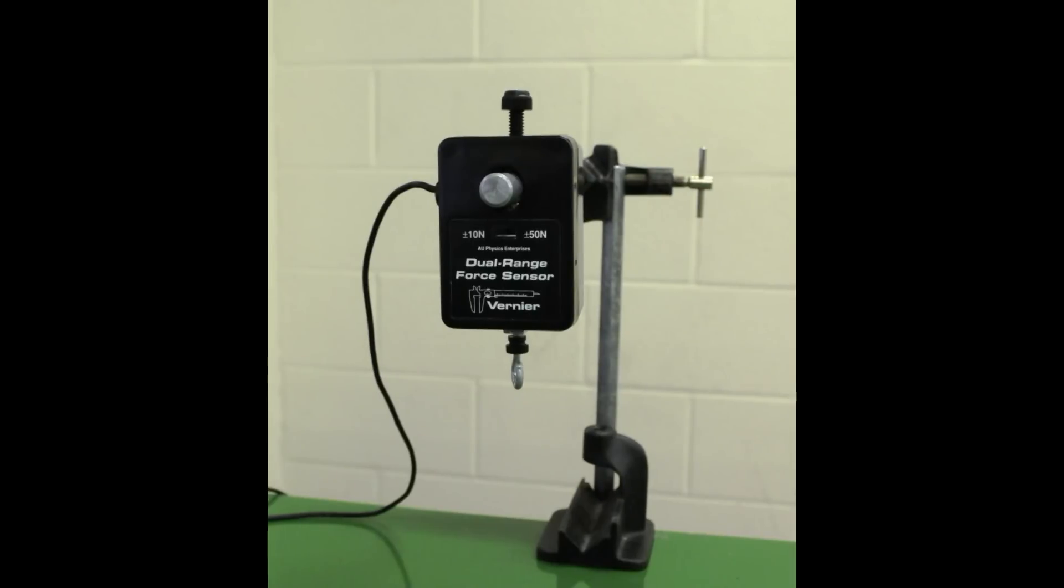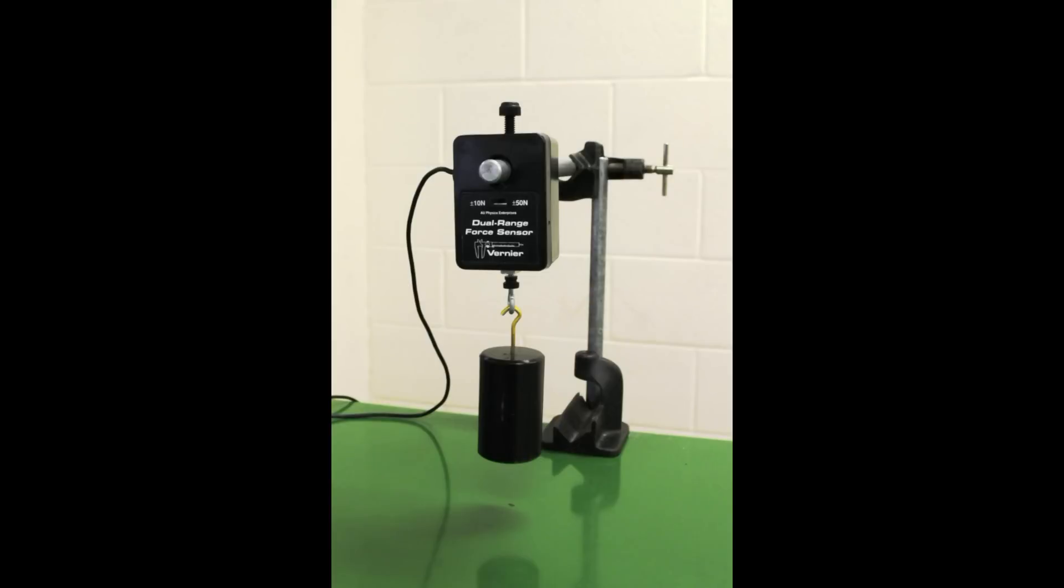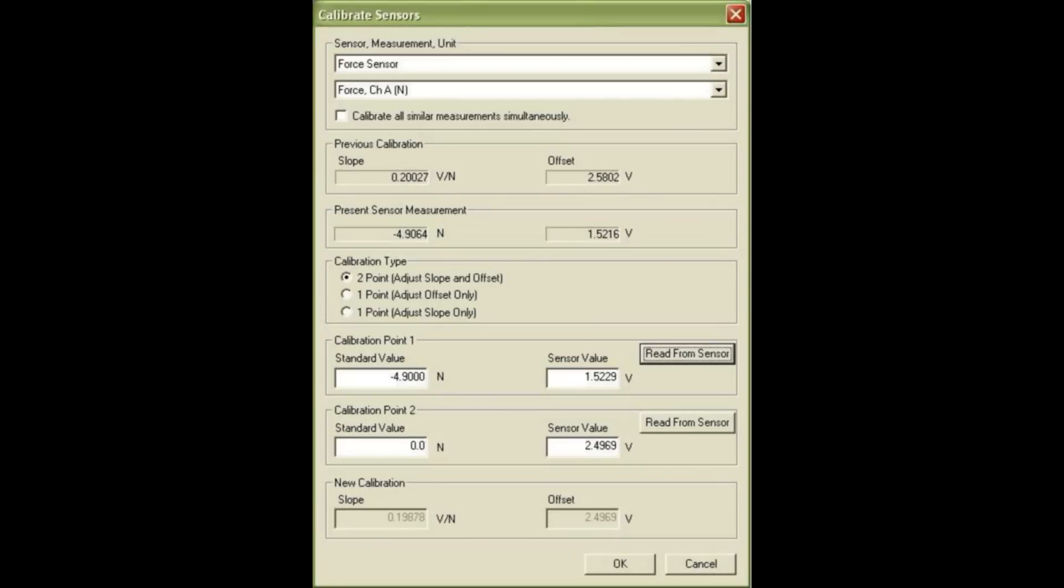You'll need to recalibrate the first sensor since you have inverted it and put the screw back in place. Start with no weight, then hang 500 grams, but fool the calibration program by calling this hanging weight minus 4.9 newtons. This way, upward pressure on the force sensor will be read as positive values.